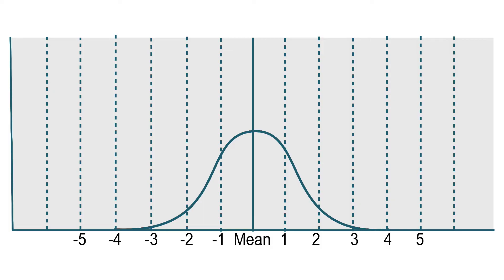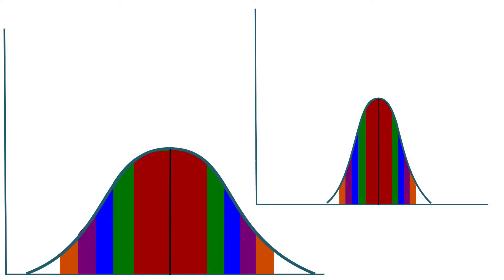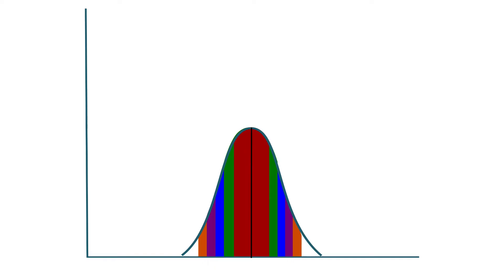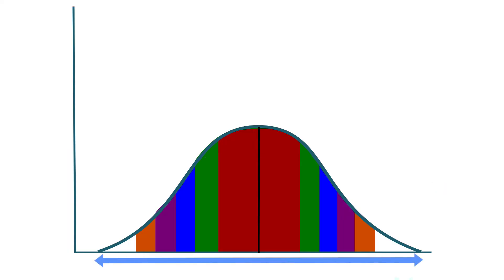The third term is standard deviation, or SD. SD is the average variation in a set of numbers on a normal distribution curve. It shows, on average, how close each number in the set is to the mean. SD stretches or squeezes a normal distribution curve. A small SD means the numbers are close to the mean, resulting in a narrow curve with a high peak and small spread. A large SD means the numbers are generally far from the mean, leading to a wide, flat, and widespread curve.